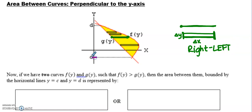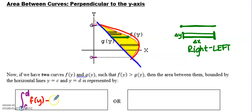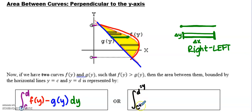We're going to sum from y equals c to y equals d, with the right curve in terms of y minus the left curve in terms of y, and each little rectangle has an infinitesimally small delta y, written as dy. So the integral goes from c to d — those are y values — and we do right minus left with respect to the y-axis.